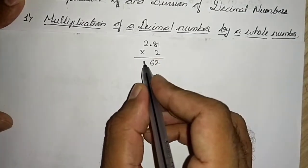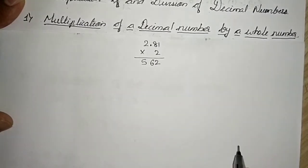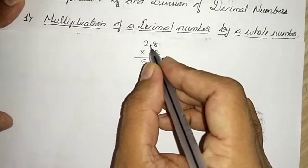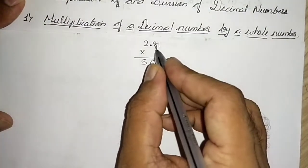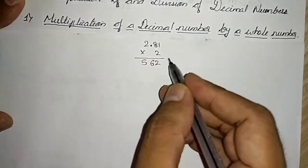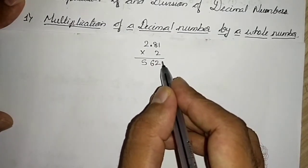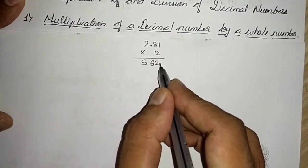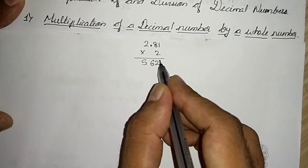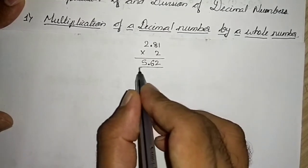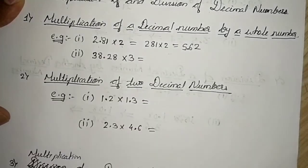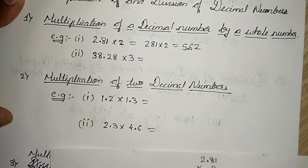So it is 562. Now this is a decimal number — how many decimal places did we remove? Two. So starting from the right, moving towards the left, we count two places and place the decimal point. Our answer is 5.62.